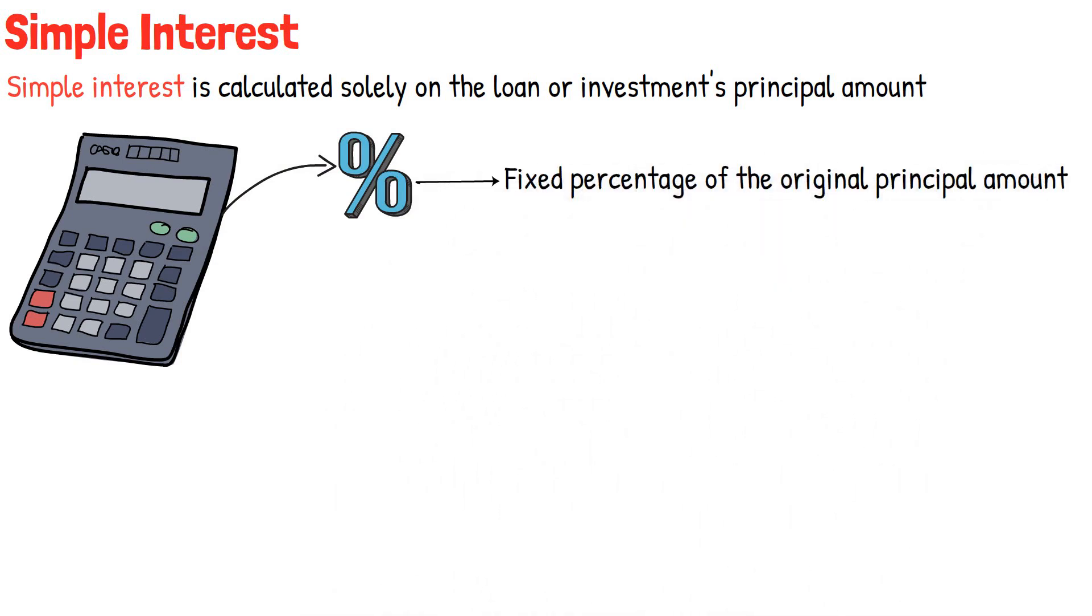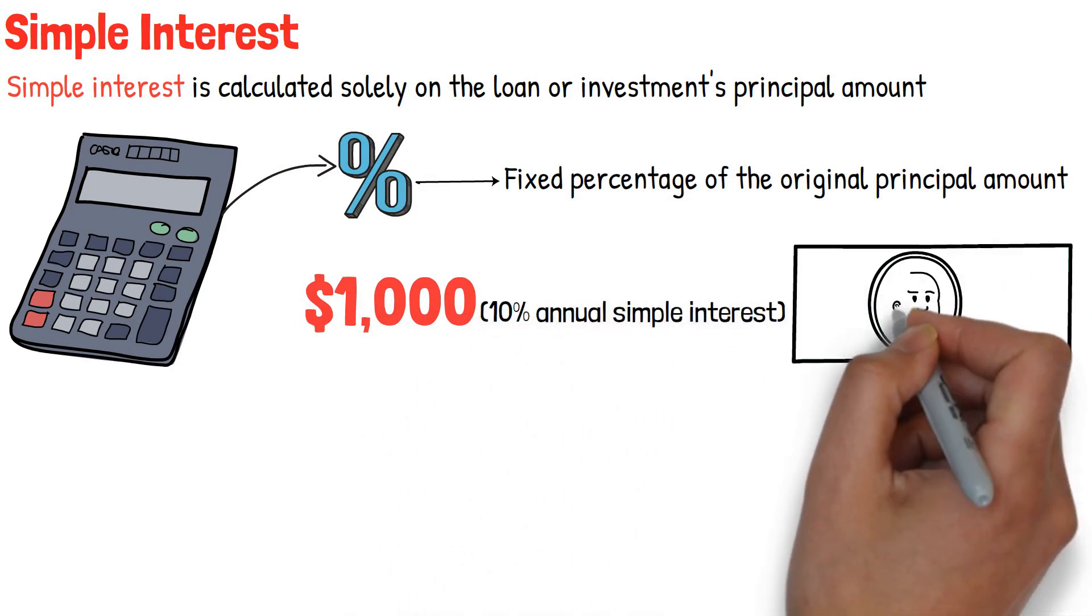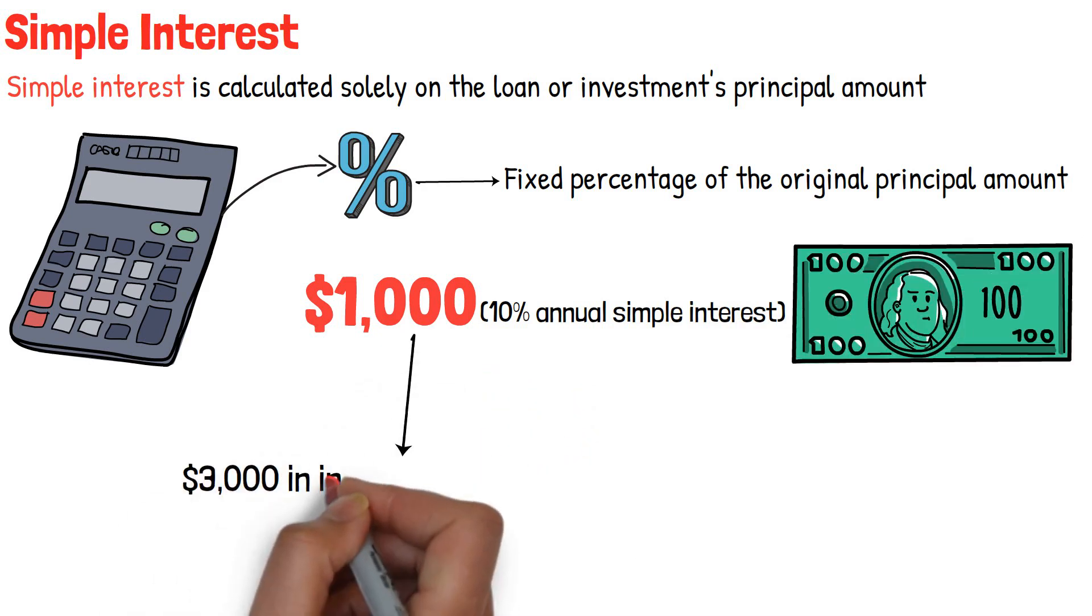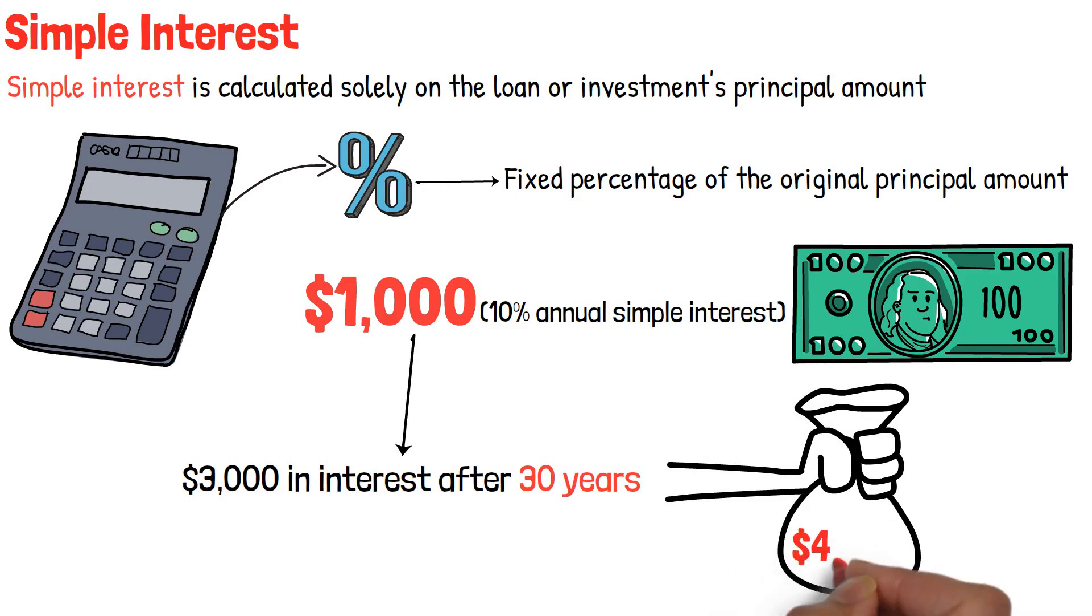For example, if you invest $1,000 and earn 10% annual simple interest, you will earn $100 yearly. You would have made $3,000 in interest after 30 years, and your investment would be worth $4,000 - $1,000 plus $3,000.